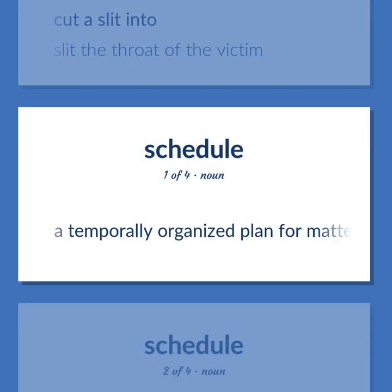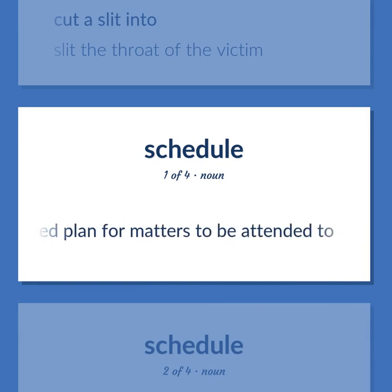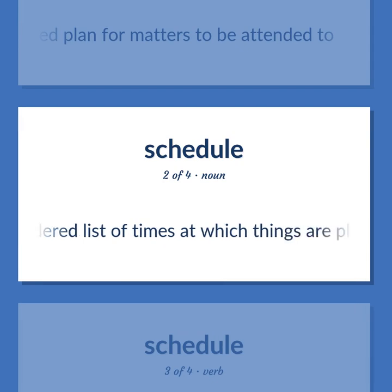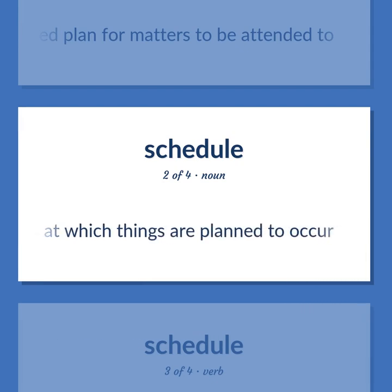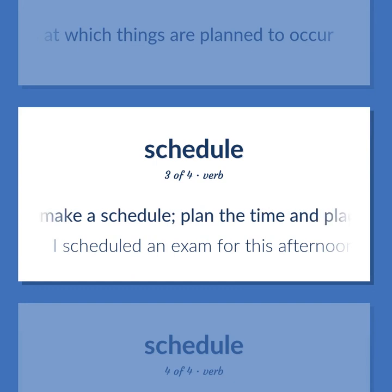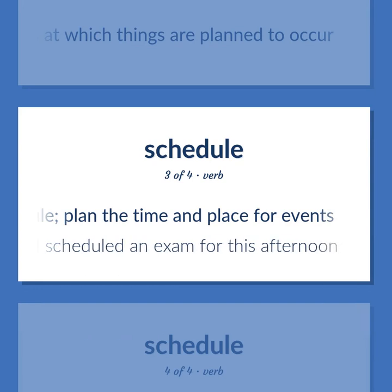Schedule: A temporally organized plan for matters to be attended to. An ordered list of times at which things are planned to occur. Make a schedule; plan the time and place for events. I scheduled an exam for this afternoon.